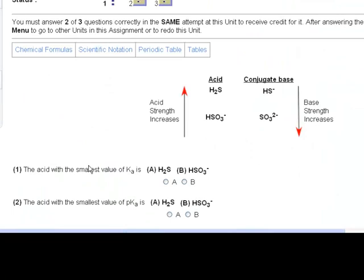So let's see what the questions have to ask. The acid with the smallest value of Ka is, well we have two choices. Here's the acid column, and it's an acid strength increases. Well, from what we just said, this acid here would have a larger equilibrium constant. The smallest value of Ka would be HSO3-.